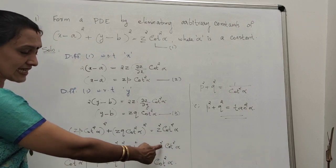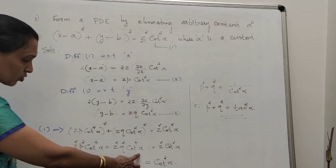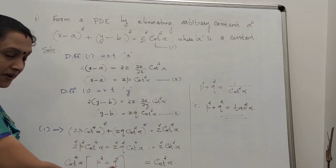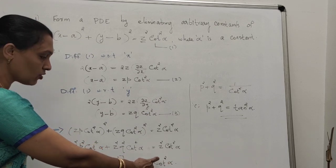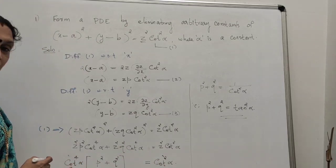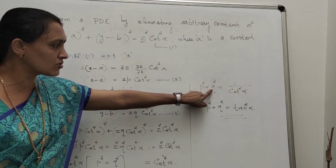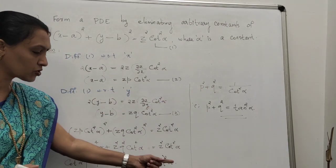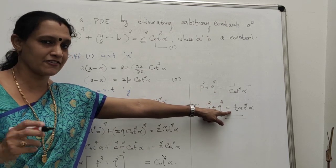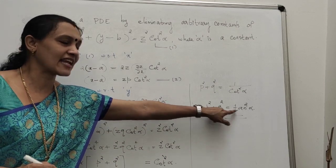Now simplify: z² cancels from everywhere. cot⁴α is common in the two left-hand terms, giving cot⁴α(p² + q²) = cot²α. Dividing both sides by cot²α, we get cot²α(p² + q²) = 1, so p² + q² = 1/cot²α = tan²α. Therefore the final PDE is p² + q² = tan²α.